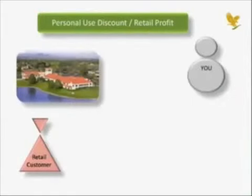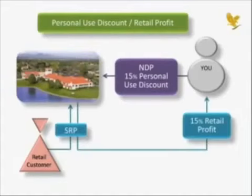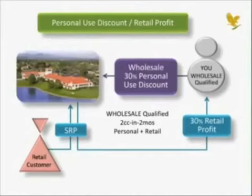On becoming a distributor, you purchase product directly from the company at a 15% discount. In addition, when your retail clients order product via your company-linked personal website, the company pays you a profit of 15% of the retail price. When your personal and retail volume equals two case credits within any two consecutive calendar month period, you become wholesale qualified.